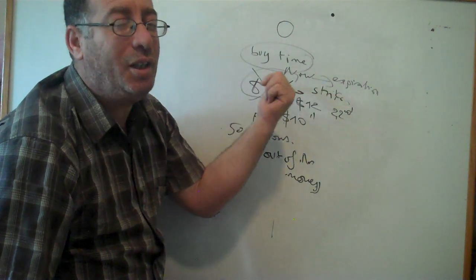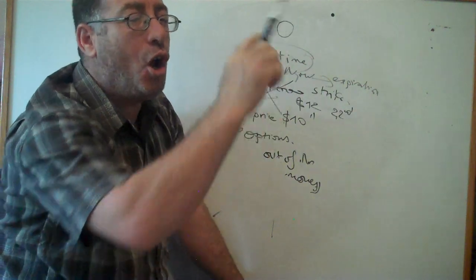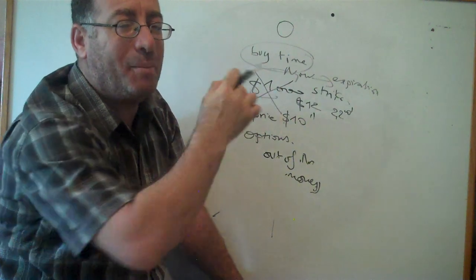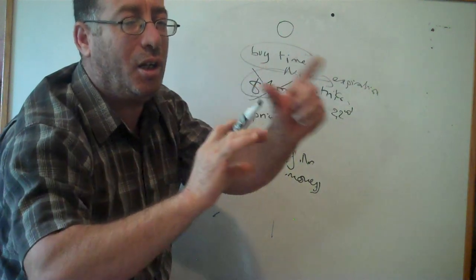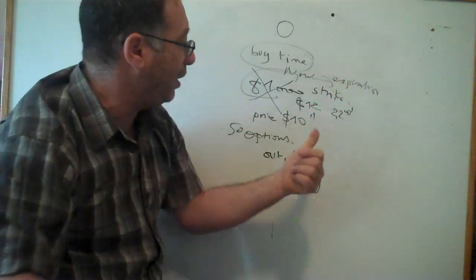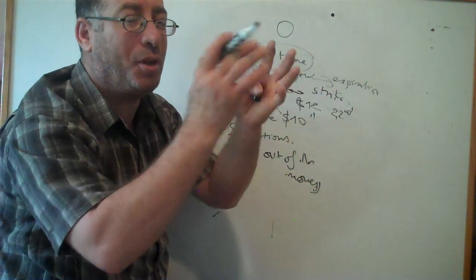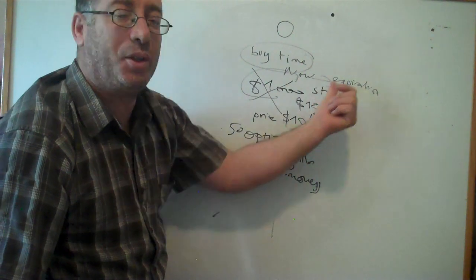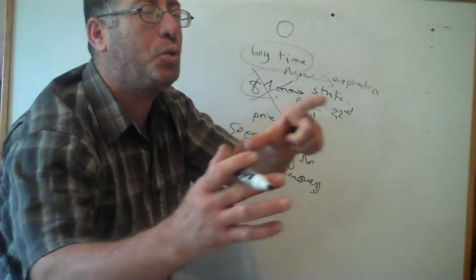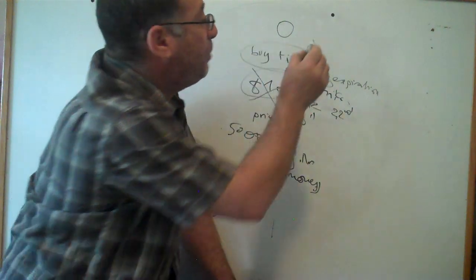I will give you a challenge: go to other channels speaking about options — they say options are very easy, you can make too much money. You can make too much money if you are with the trend, if the stock goes beyond twelve. But they don't tell you that you are putting all your money at one hundred percent risk.